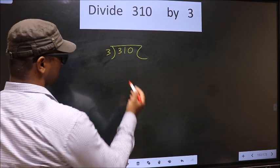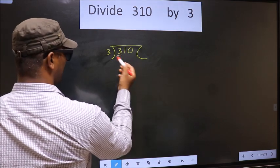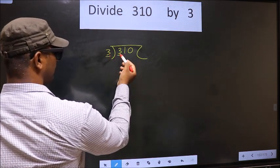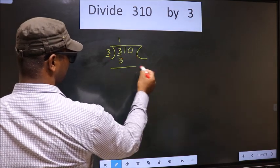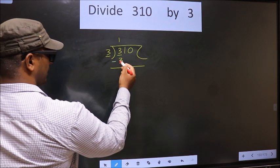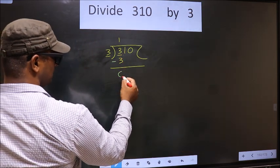Next, here we have 3, and here also 3. When do we get 3 in the 3 table? 3 once is 3. Now subtract: 3 minus 3 is 0.